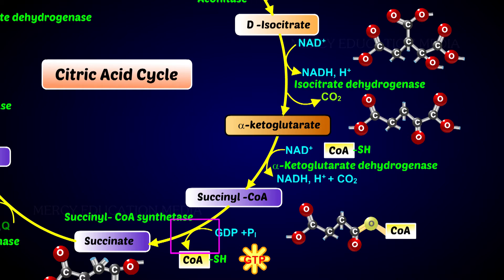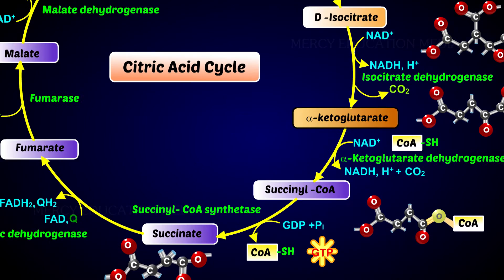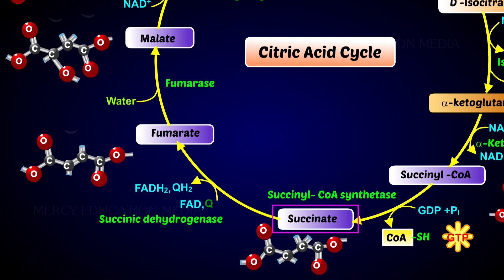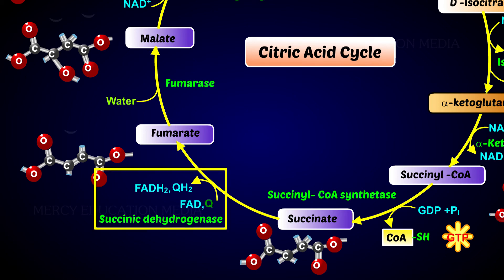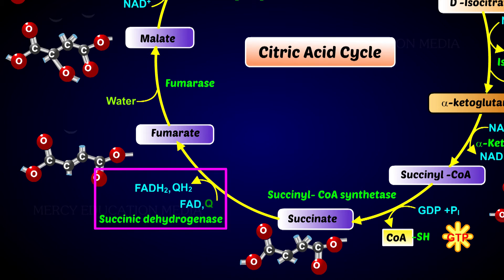This is called substrate level phosphorylation. The succinic acid is oxidized to form fumaric acid by succinic dehydrogenase. Here, FAD+ is reduced to FADH2.